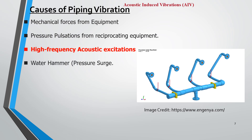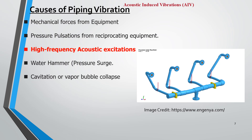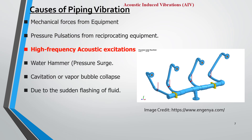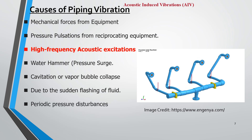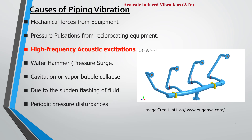Additional causes include: water hammer or pressure surge due to sudden valve closure; cavitation or vapor bubble collapse due to localized pressure drop; sudden flushing of fluid; and periodic pressure disturbances during flow past the dead end of branch connections or instrumentation items. These are some of the reasons which may cause piping vibration in any piping system.